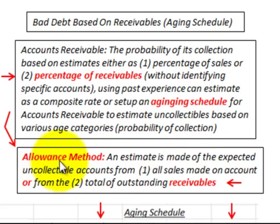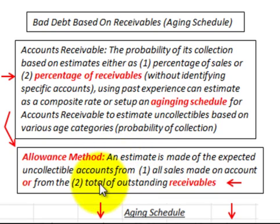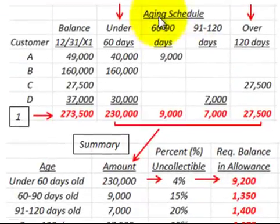We're also going to be using the allowance method here. We'll look at the balance sheet and the income statement, and how we record our accounts receivable and our allowance for accounts receivable — based on the total outstanding receivables. So let's look at our aging schedule.